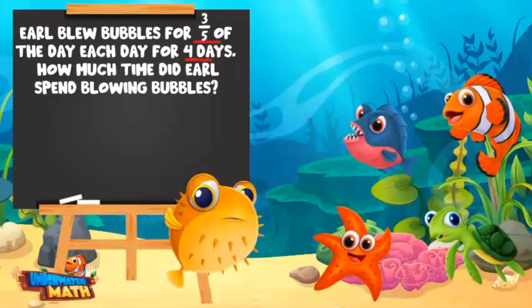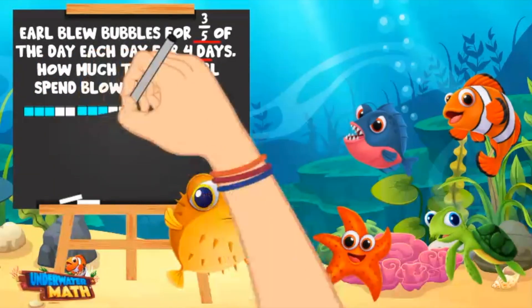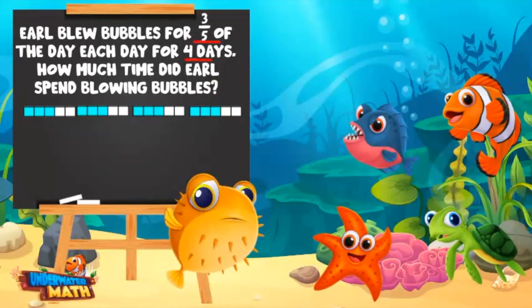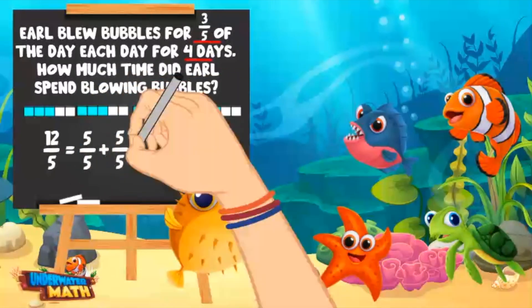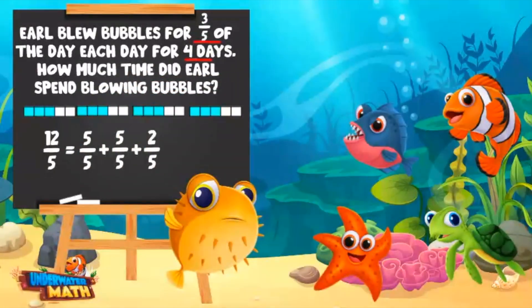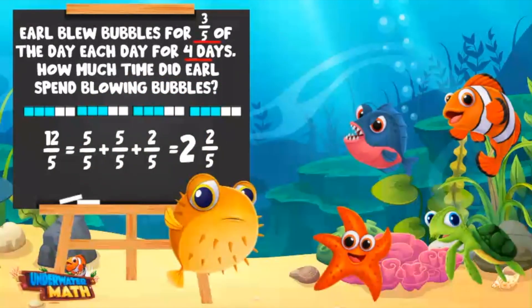Let's determine how much time you spend blowing bubbles by making a model. Here we have three-fifths represented and we need to do it four times. How many total fifths do we have here? I see 12 total fifths, so the answer must be 12-fifths. But wait, that is an improper fraction. Right you are. Let's convert it to a mixed number. We can pull out two sets of five-fifths and have two-fifths left over. The answer is two and two-fifths.